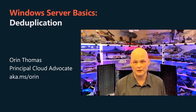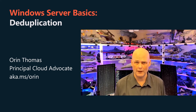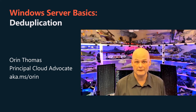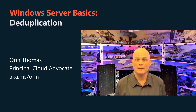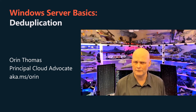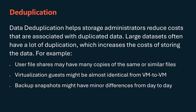Data deduplication, often called dedupe for short, is a feature available in Windows Server that can help reduce the impact of redundant data on storage costs. When enabled, data deduplication optimizes free space on a volume by examining the data, looking for and removing duplicate data chunks. Duplicated portions are stored once and optionally compressed for additional savings, without compromising data fidelity or integrity.